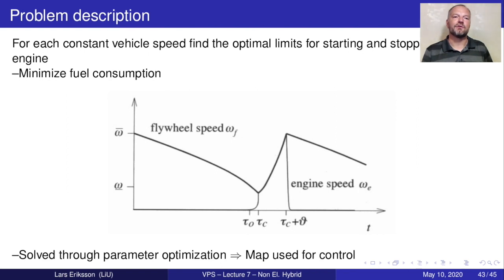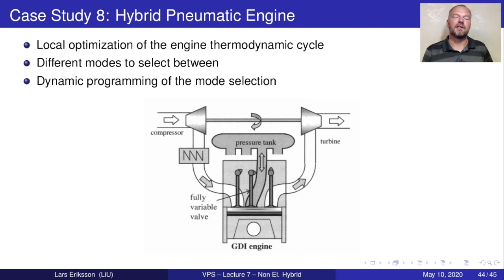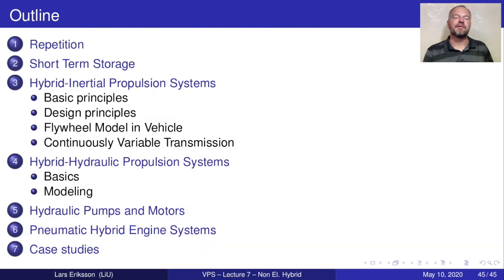You can read more about this system in case study number three. Coming to another case study, case study number eight, we have this hybrid pneumatic engine where it was also done with combined optimization using offline for doing the engine thermodynamic cycle, optimizing it, and then having different mode models like the regenerative mode, like the boosting mode. And then to develop a complete driving schedule, they use dynamic programming to do the mode selection.